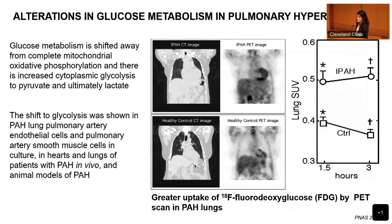Our group has been interested in glucose metabolism in pulmonary hypertension. We and several other groups have shown a complete shift in glucose metabolism in PH — a shift from oxidative phosphorylation to aerobic glycolysis. Glucose goes into pyruvate, but instead of feeding into the TCA cycle, it's converted to lactate. This shift in glycolysis has been shown in pulmonary artery endothelial cells and smooth muscle cells in culture, as well as in the hearts and lungs of PH patients in vivo and in animal models of PAH.